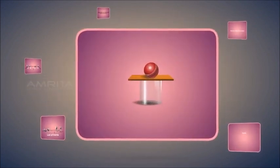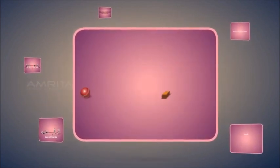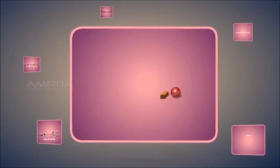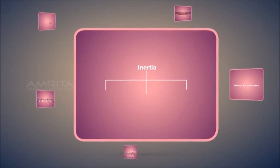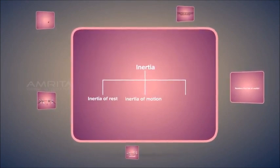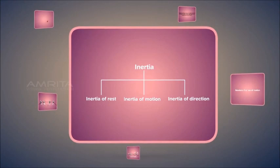The tendency of an object to continue its state of rest or of uniform motion in a straight line is called inertia. The three types of inertia are inertia of rest, inertia of motion, and inertia of direction.